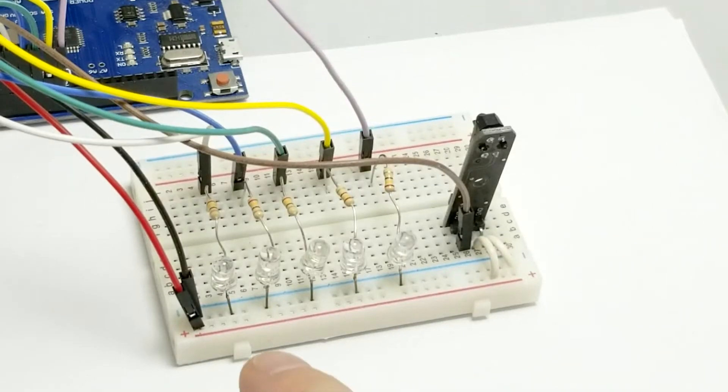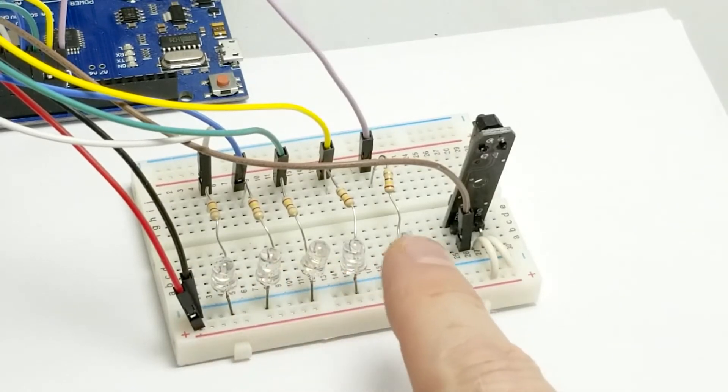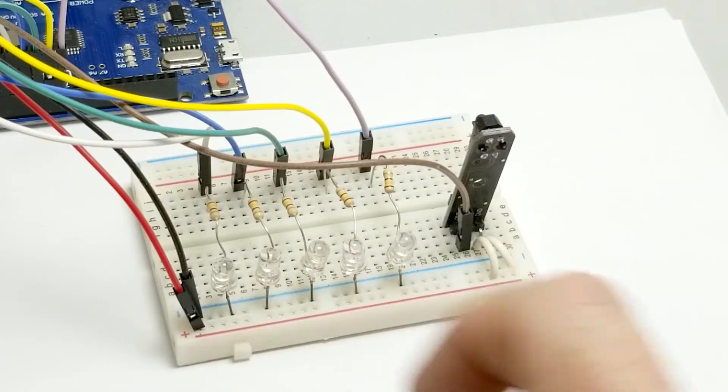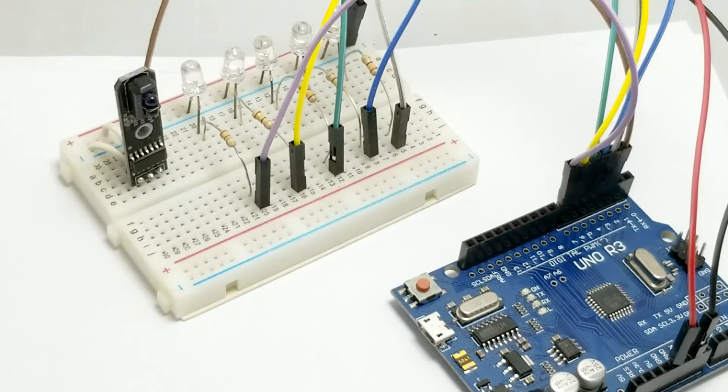I'm going to write a simple Arduino code that lights up each LED one at a time from left to right and then back right to left. Each time the infrared sensor detects my finger I'm going to have the code double the speed of the LED sequence.